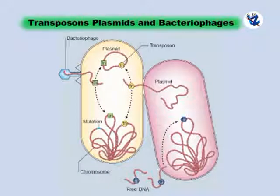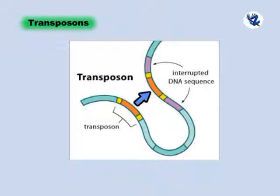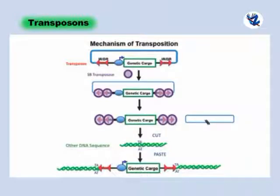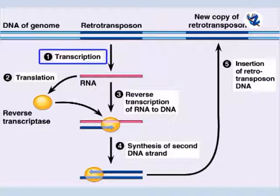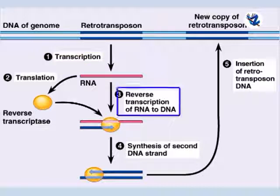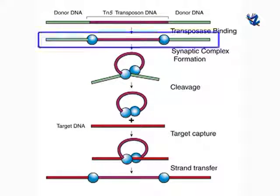Transposons, plasmids, and bacteriophages. Transposons are sequences of DNA that can move or transpose themselves to new positions within the genome of a single cell — they are also called jumping genes. On the basis of their mechanism, they are classified into two types. First, retrotransposons: they copy in two stages — from DNA to RNA by transcription, and then from RNA back to DNA by reverse transcription. Second, DNA transposons: they do not involve an RNA intermediate.